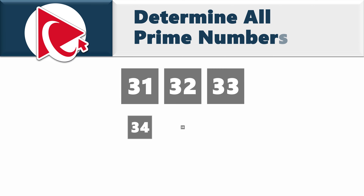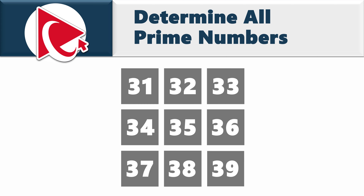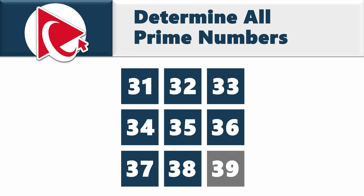You're presented with 9 numbers and need to determine all prime numbers in this series. The numbers are 31, 32, 33, 34, 35, 36, 37, 38, and 39. A new answer should be selected out of 4 possible choices.